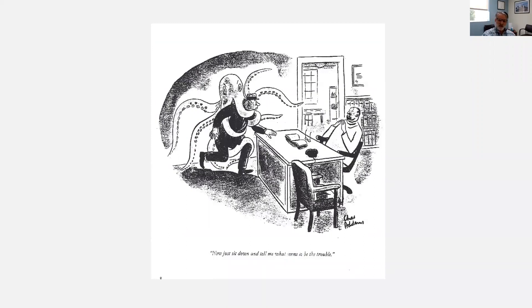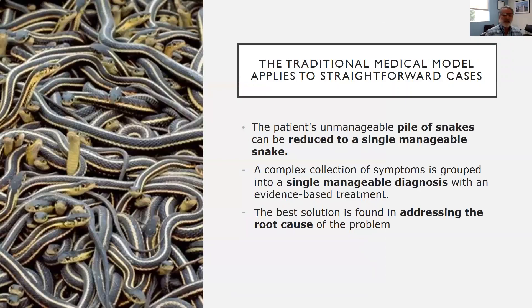In the addictions field, they talk about somebody having a monkey on their back. I like this image of an octopus on a person's back — this really captures the kind of severity of trouble that people come presenting with.